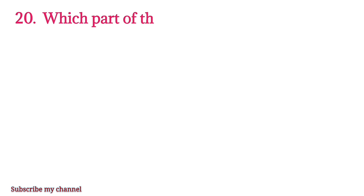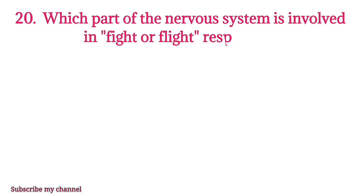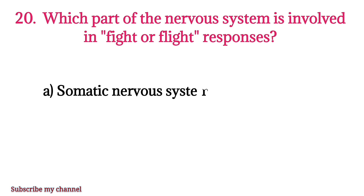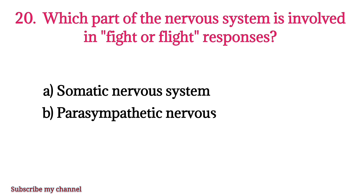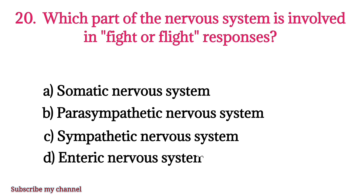MCQ number twenty: Which part of the nervous system is involved in fight or flight responses? Option A: somatic nervous system, option B: parasympathetic nervous system, option C: sympathetic nervous system, option D: enteric nervous system. The right option is option C.